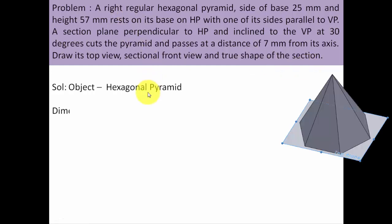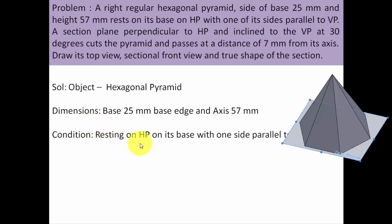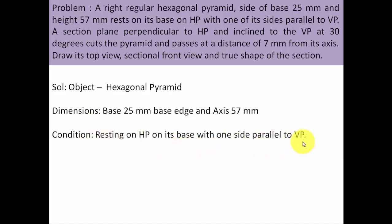This object is a hexagonal pyramid with base edges of 25 millimeters and height or axis length of 57 millimeters. It is resting on the HP on its base with one side parallel to VP. Think about this - there is a hexagonal pyramid resting with its base on HP, and the true shape of the base can only be seen from the top. Hence you have to begin by making the top view first. While making its top view, make sure that one side is kept parallel to the XY line to ensure the condition reflects perfectly in your drawing.